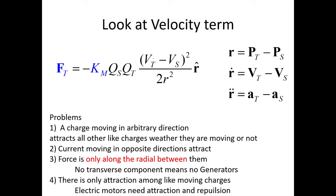So this says that parallel moving wires, current in parallel wires have no attraction. And this says that current traveling in opposite directions have attraction when they should have repulsion. Okay, so right off the bat, we're dead in the water. I don't really need to go any farther than this. Okay, but force only along the radial between the charges means no transverse components means no generators. Generators work on the longitudinal components. And if there's only attraction among like moving charges, electric motors wouldn't work because electric motors need attraction and repulsion.